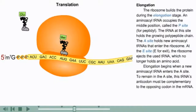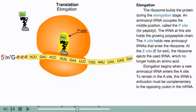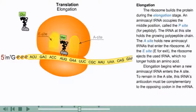The ribosome builds the protein during the elongation stage. An aminoacyl tRNA occupies the middle position called the P site for peptidyl. The tRNA at this site holds the growing polypeptide chain. The A site holds the new aminoacyl tRNAs that enter the ribosome. At the E site — E for exit — the ribosome ejects the used tRNA, which no longer holds an amino acid.